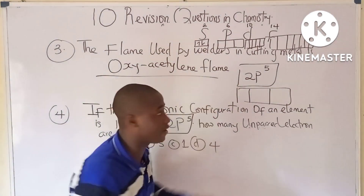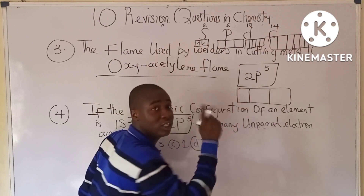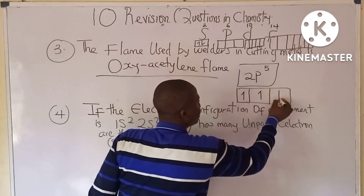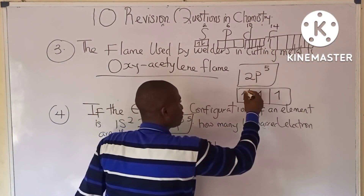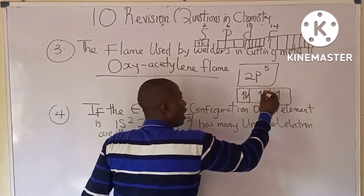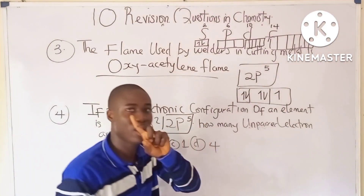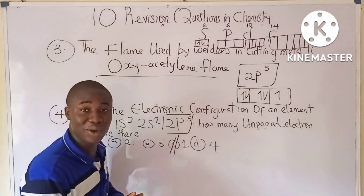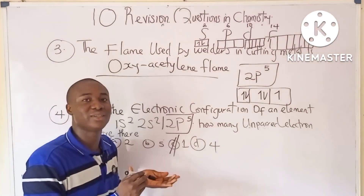We draw three boxes for the p orbital and fill 5 electrons. By Hund's rule, we fill singly first before pairing. Filling singly: one, two, three — then we pair one box, leaving one unpaired electron. So there is one unpaired electron.